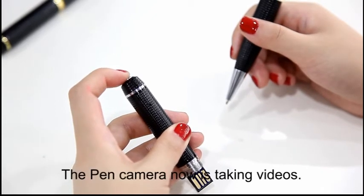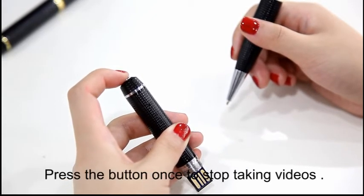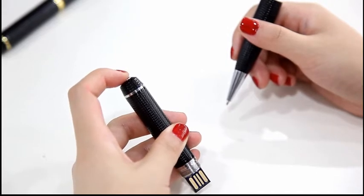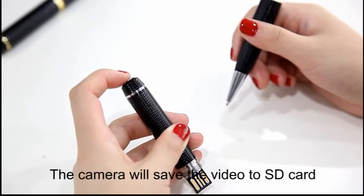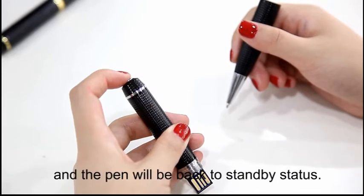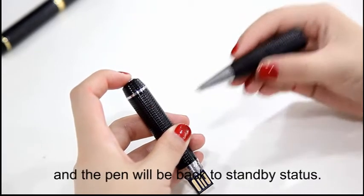The pen camera now is taking videos. Press the button once to stop taking videos. The camera will save the video to SD card, and the pen will be back to standby status.